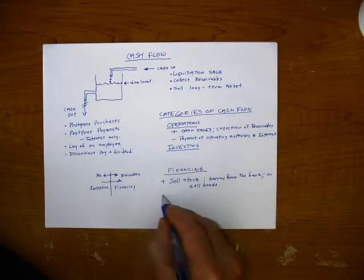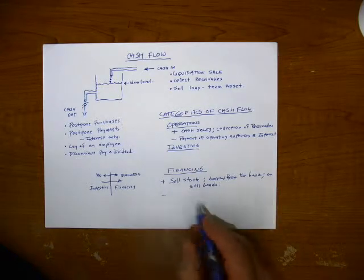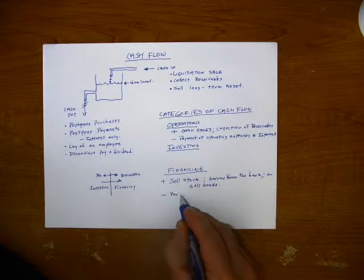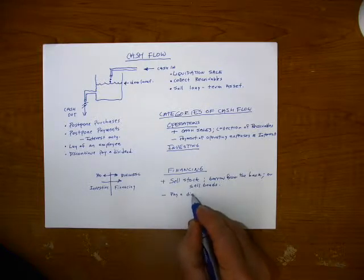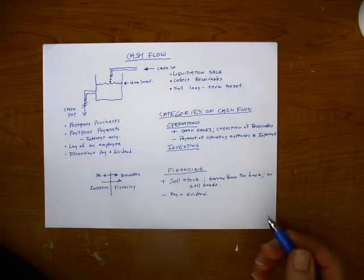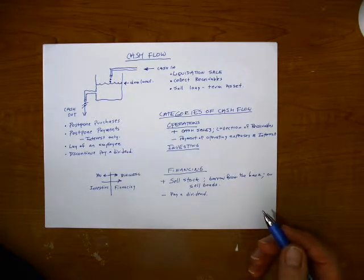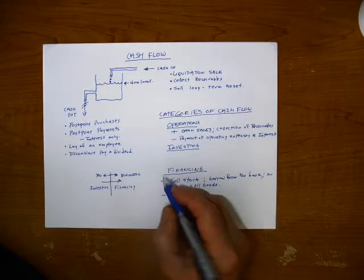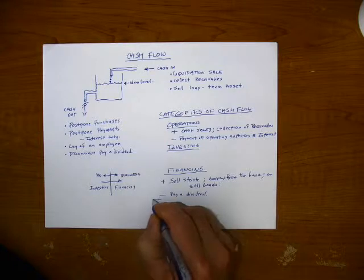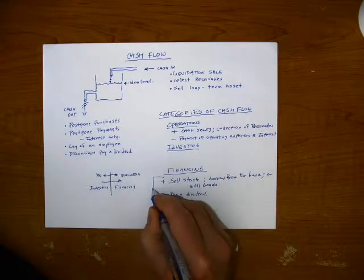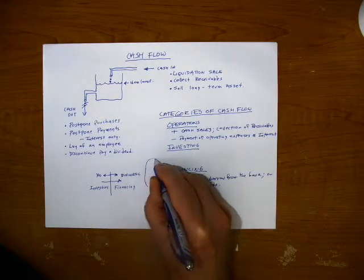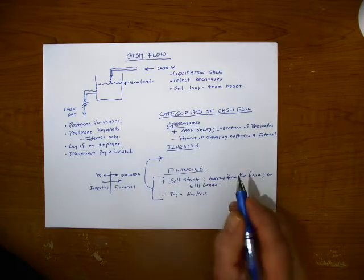Cash goes out when we pay a dividend. A dividend is a transfer of profits to the stockholders. Now, the cash we generate from financing then we use for investing. Investing. Let's make a plus here.